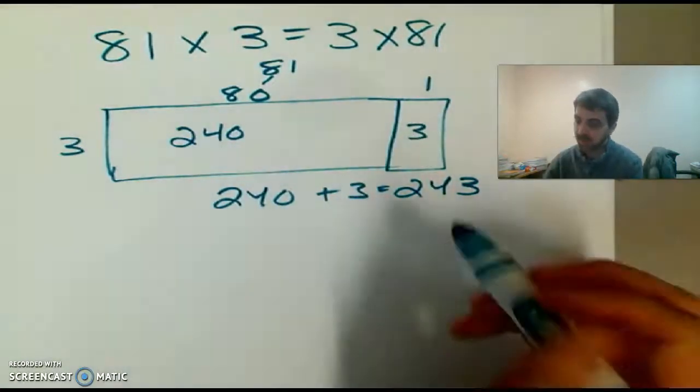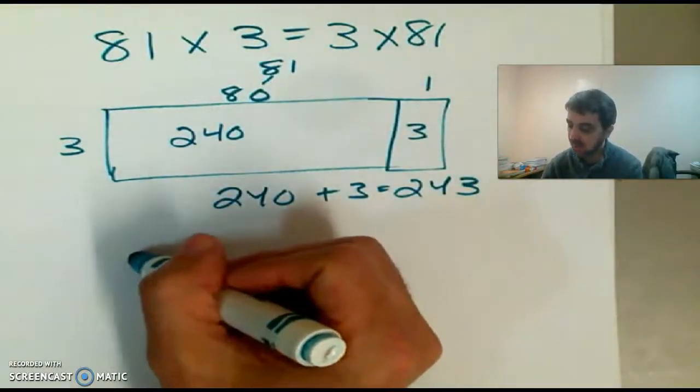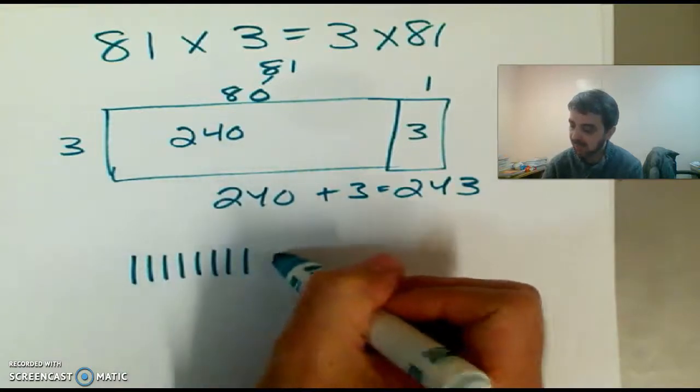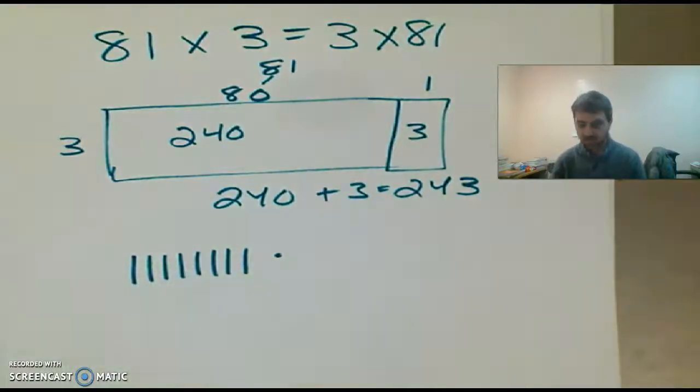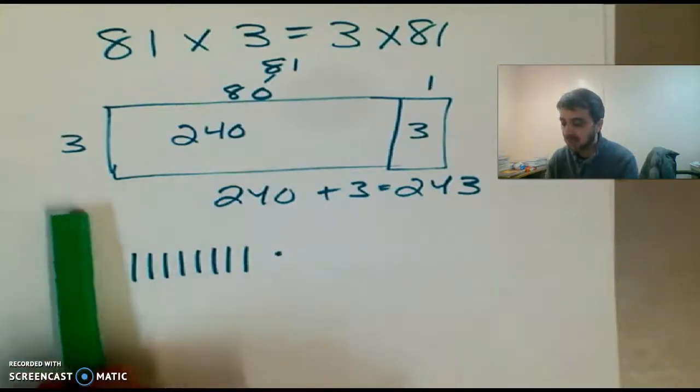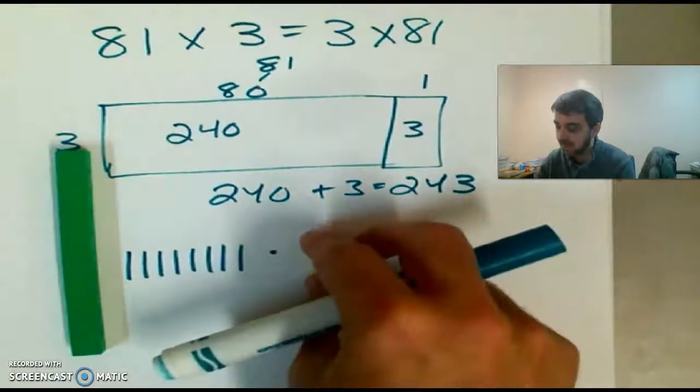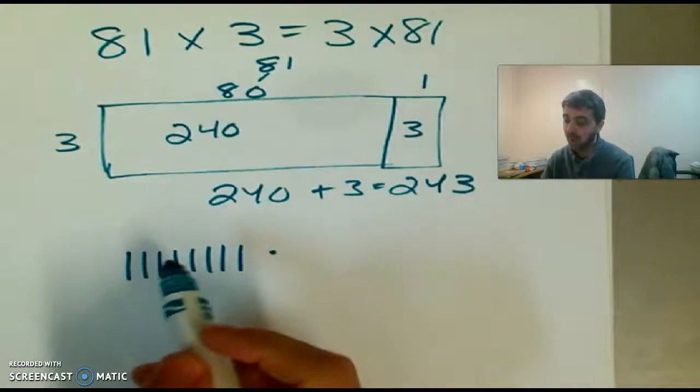So watch what I do here. I'm going to take 81 and draw it out in base 10. So 81: 10, 20, 30, 40, 50, 60, 70, 80, 1. Okay? Because each of these represents - here, I'll show you real quick - each of these lines represents a 10, and the dot represents a 1. Okay? So here we have 81.